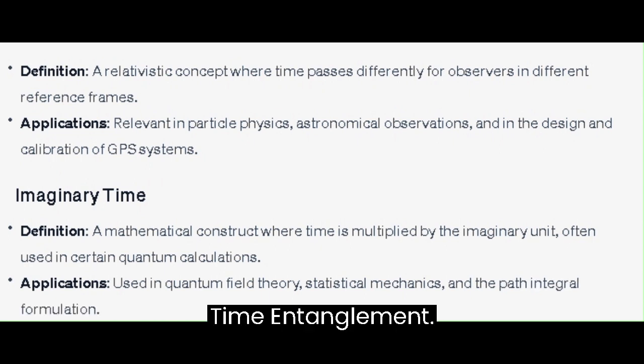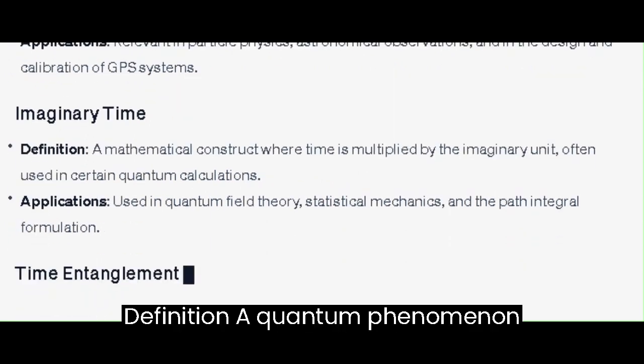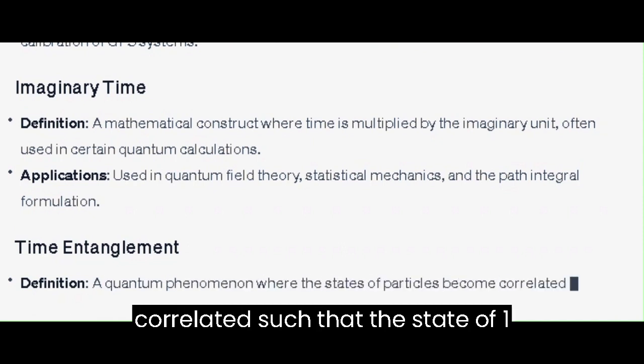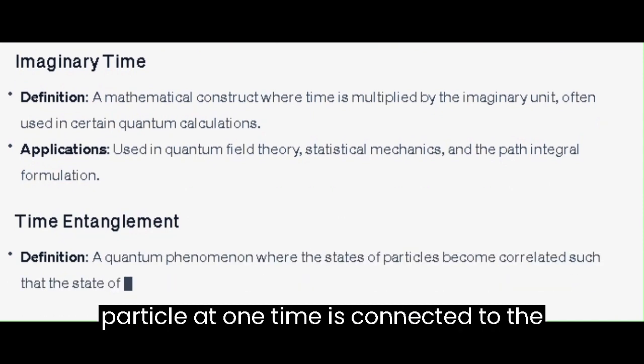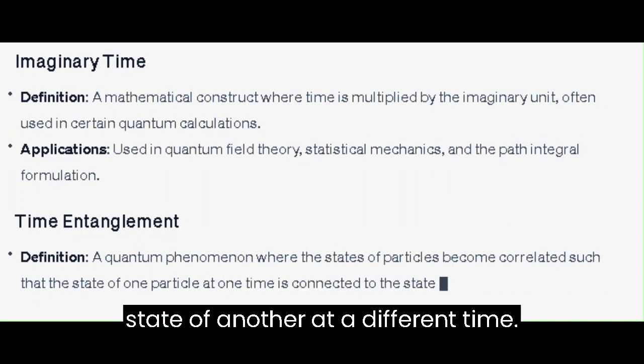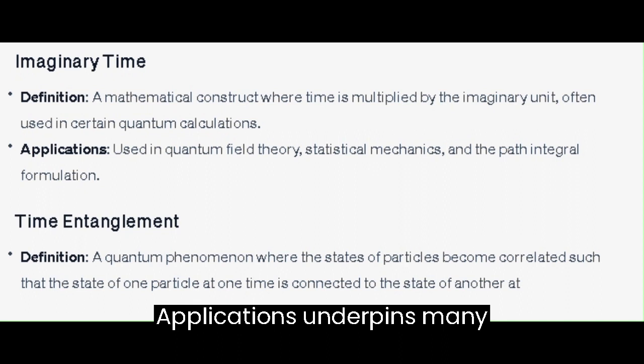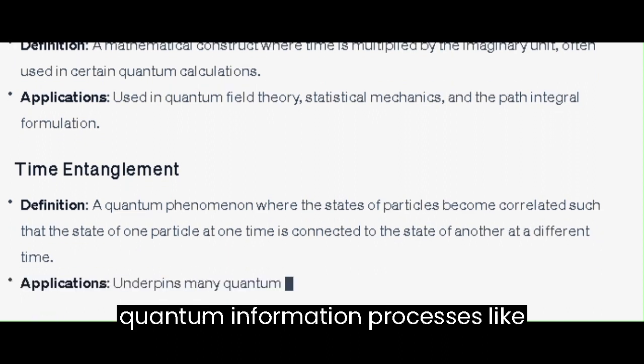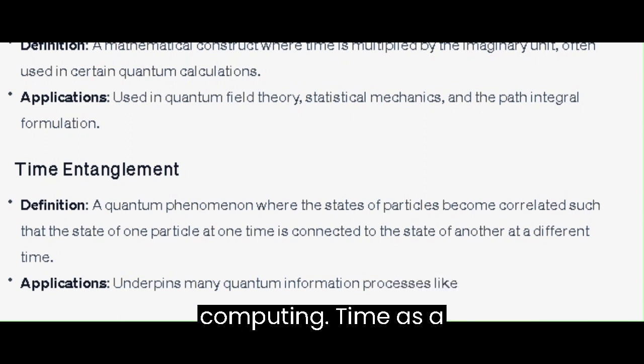Time Entanglement - a quantum phenomenon where the states of particles become correlated such that the state of one particle at one time is connected to the state of another at a different time. Applications: underpins many quantum information processes like quantum cryptography and quantum computing.